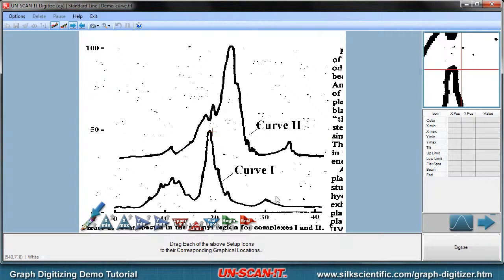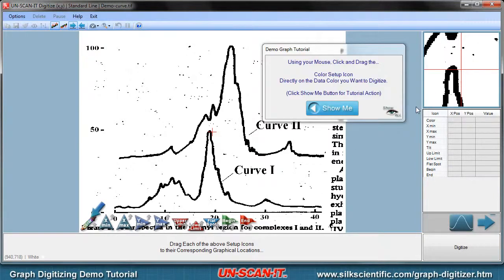The next screen is where you will place the setup icons on the image. General instructions will be presented at the bottom of the screen. Simply drag and drop the setup icons to the desired locations. A zoom window in the upper right corner of the screen can be used for precise location of the setup icons. If you are unsure of where to locate the setup icons for this sample image, you can select the show me option in the demo graph tutorial window.